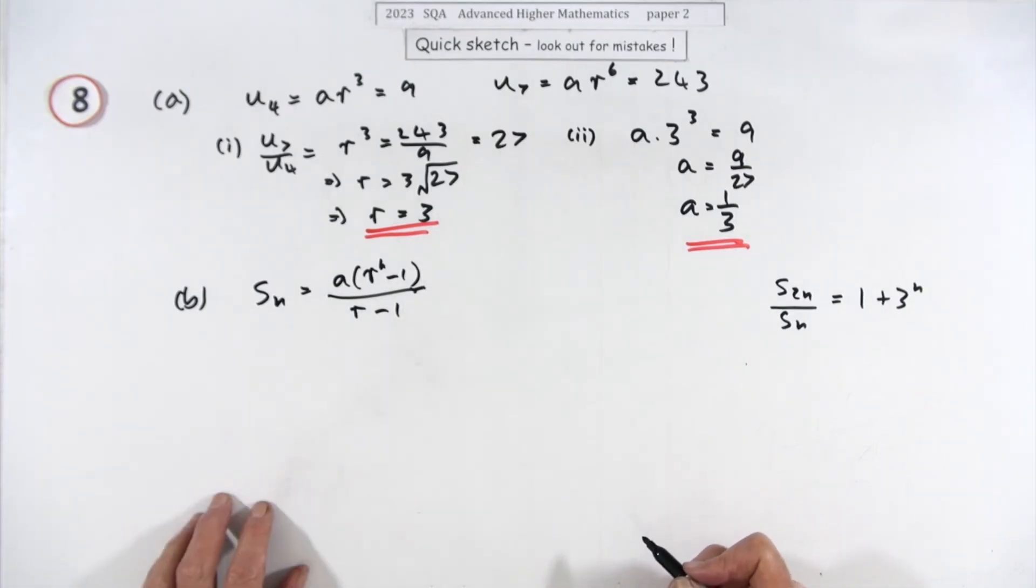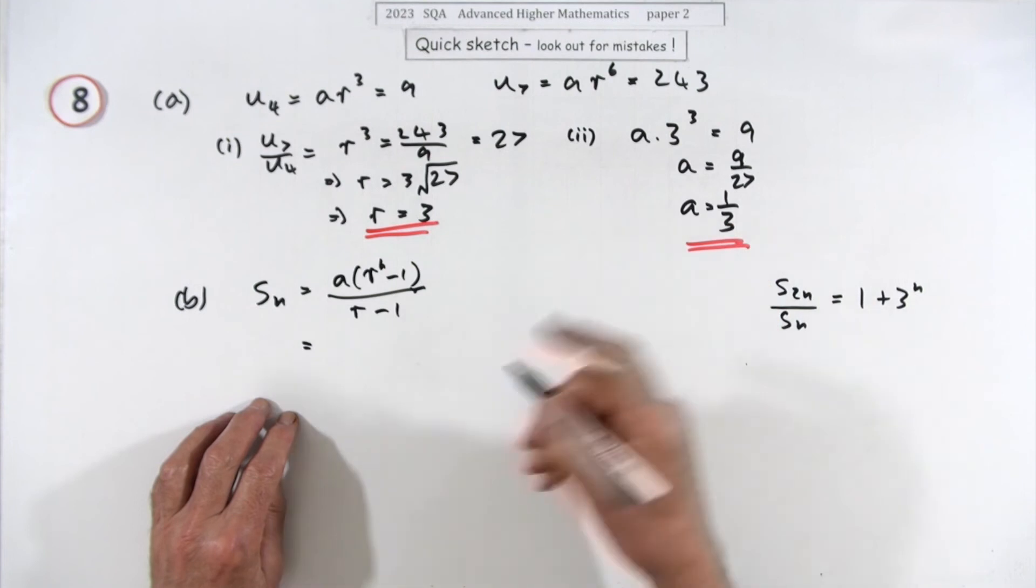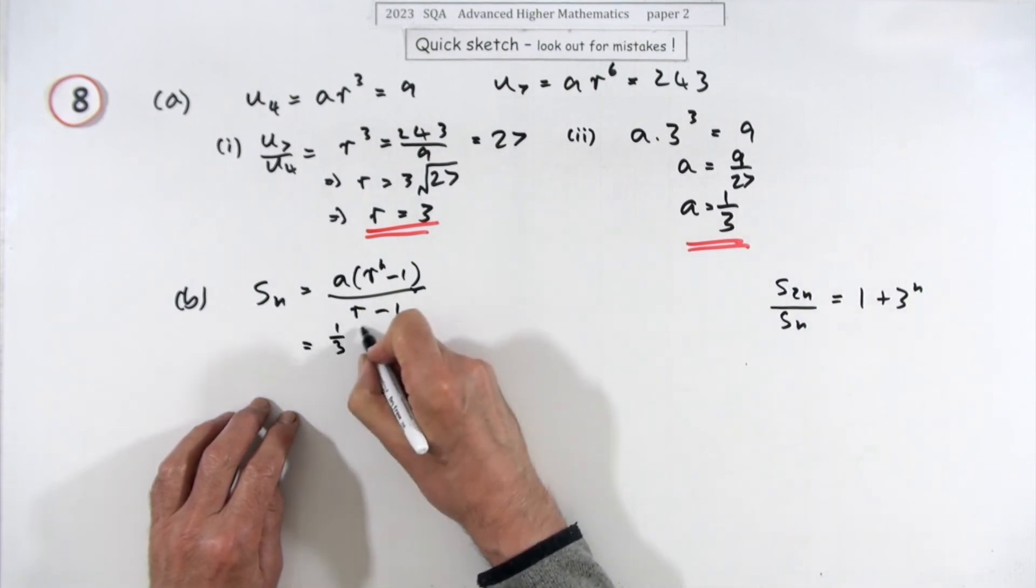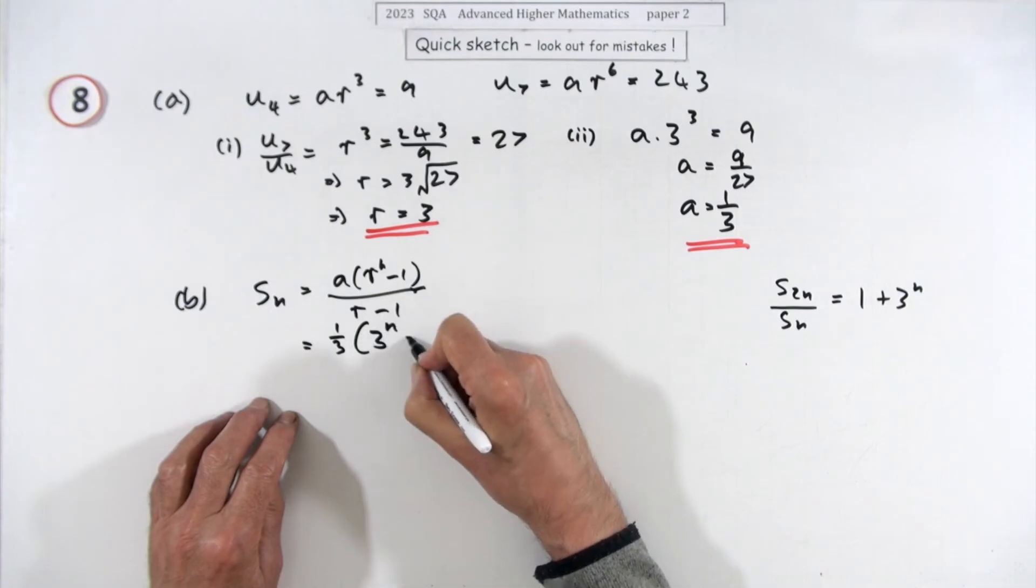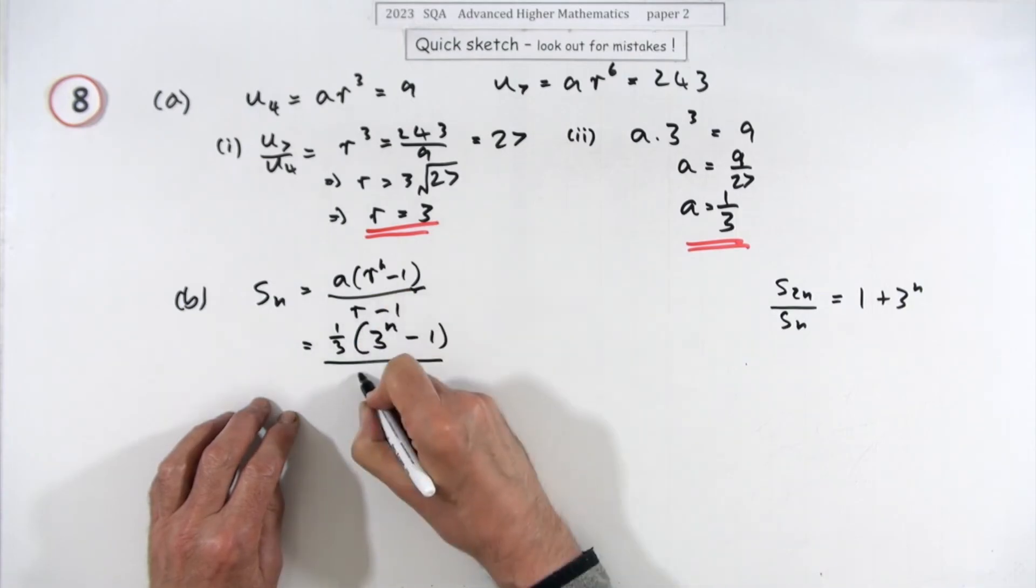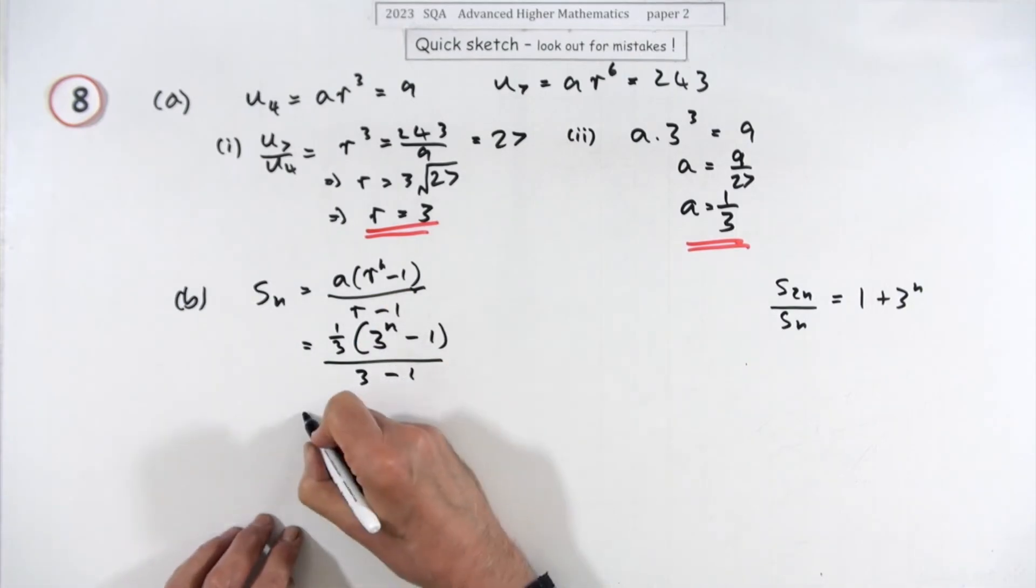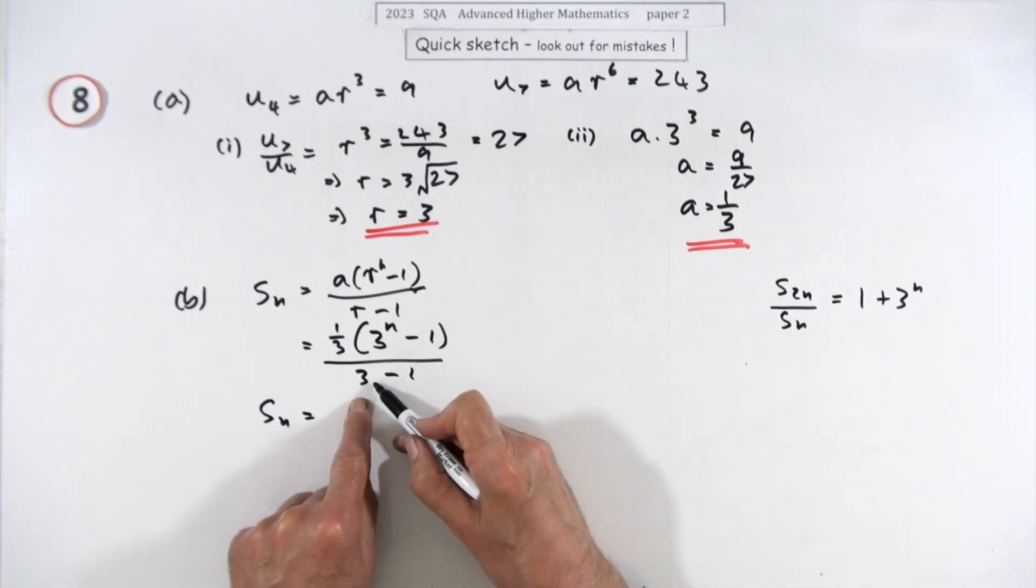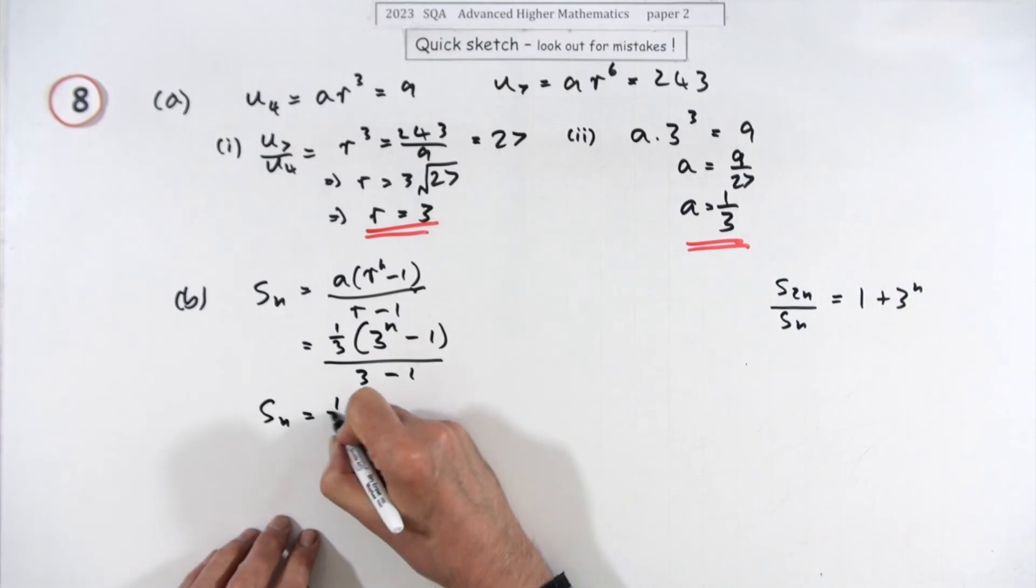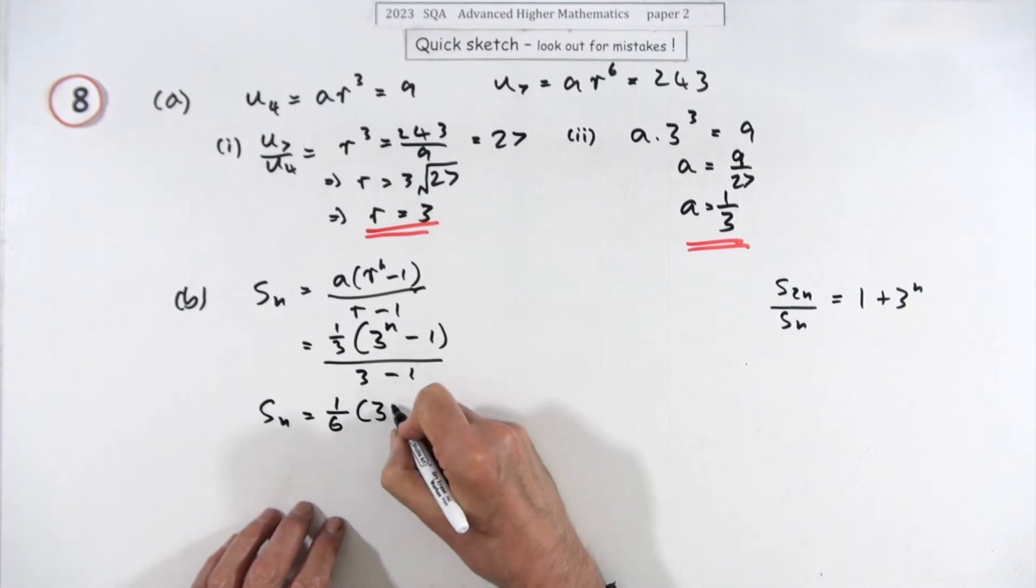That'd be the sum of n terms. So what is it in this case? Well, r is a third, so it's a third of—and what's r? 3, 3 to the n minus 1 over—what's r?—3 minus 1. Well, you can tidy that up for Sn, because that's a 2 underneath, so that's going to be a sixth. That's going to be 1 sixth of 3 to the power n minus 1.